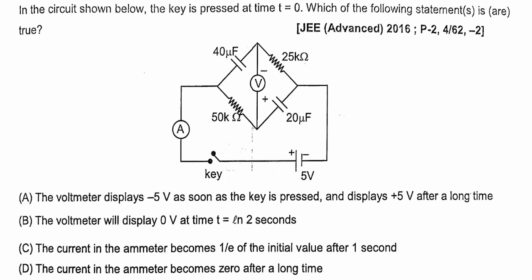We will use symbols to make it easy. The voltage source is named V0. The capacitor of 20 microfarad is called C. 25 kilo ohms is called R, 50 kilo ohms is 2R, and 40 microfarad is 2C. There is an ammeter and a voltmeter in the circuit. Our consideration is that the voltmeter is ideal and the ammeter is ideal.